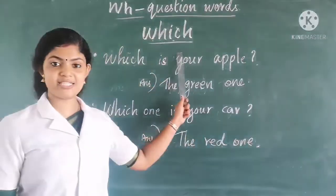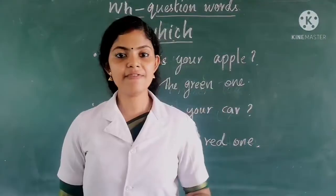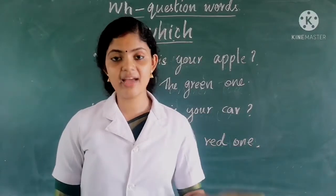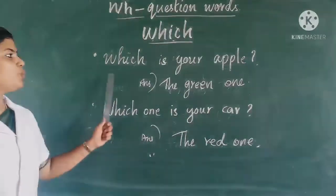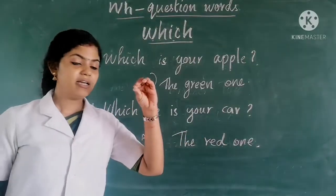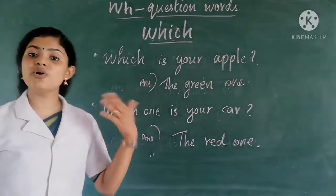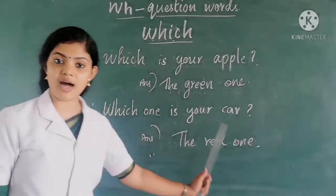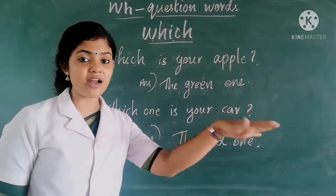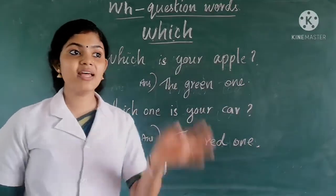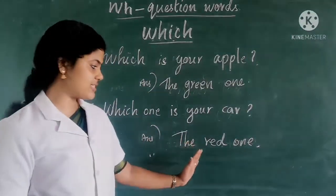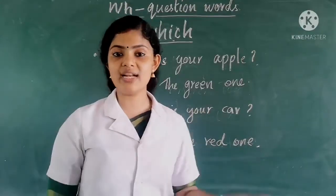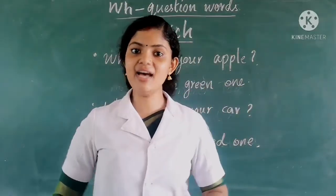The next question word is WHICH. Which refers to a set of choices. If there is more than one thing, we can choose any one of them. When we have to choose something, we use the question word WHICH. For example: Which is your apple? If there is a green apple or a red apple, we can ask which is your apple. The answer can be the green one or the red one. Similarly, which one is your car? In the parking area there are a lot of cars, and the answer can be that red one or that black one. So we use WHICH to refer to choices.